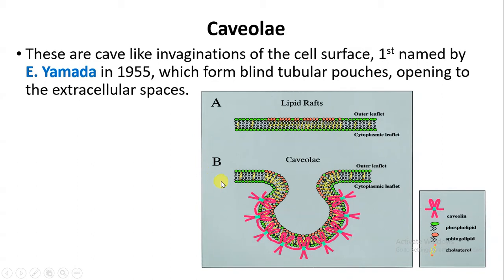As you can see, the caveolae have a flask-shaped structure and they are rich in proteins as well as rich in lipids such as cholesterol and sphingolipid, and they have a function in signal transduction.